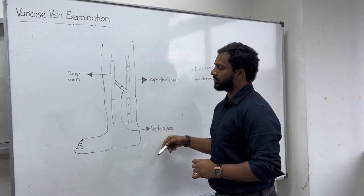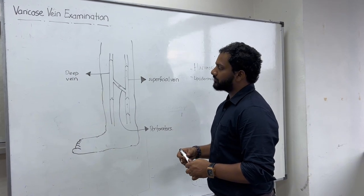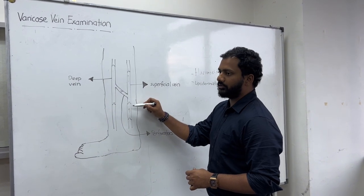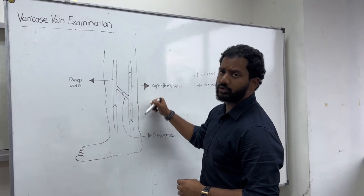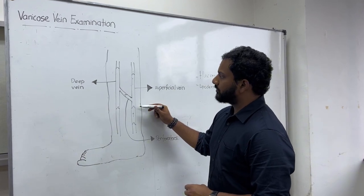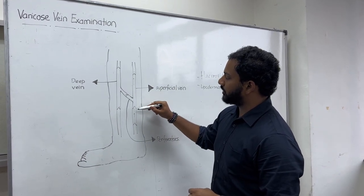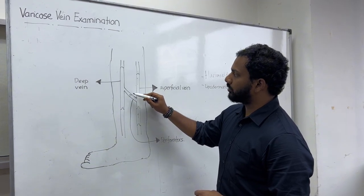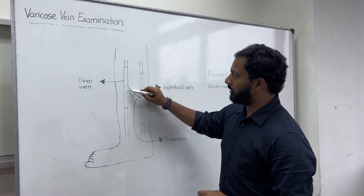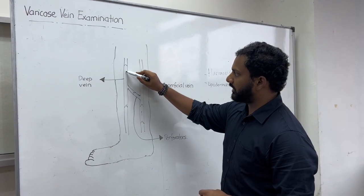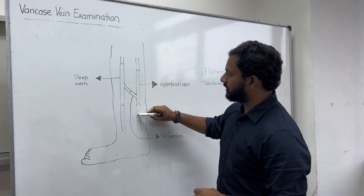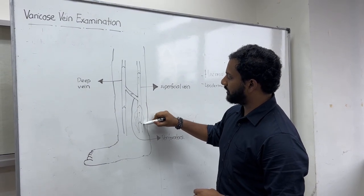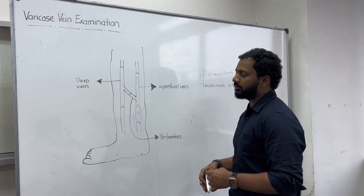The superficial vein, deep vein, and the interconnecting structure is what we call the perforating veins or perforators. If there is valve incompetency — meaning the valve isn't working well — there will be backflow of blood due to gravity. Instead of blood moving from the superficial veins into the deep veins through the perforators, there will be backflow, causing pooling at the extremities, swelling, and distension — that's when you get varicose veins.